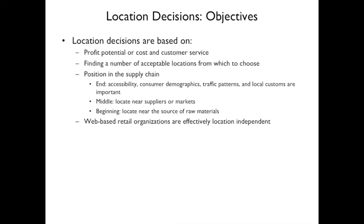The objectives of location decisions are based on profit potential, cost, or customer service. You find a number of acceptable locations and think about your position in the supply chain. At the end of the supply chain, you want accessibility, customer demographics, traffic patterns, and local customers. In the middle, you want to be close to either suppliers or markets. At the beginning, you want to be close to raw materials. Web-based retail organizations are effectively location independent.